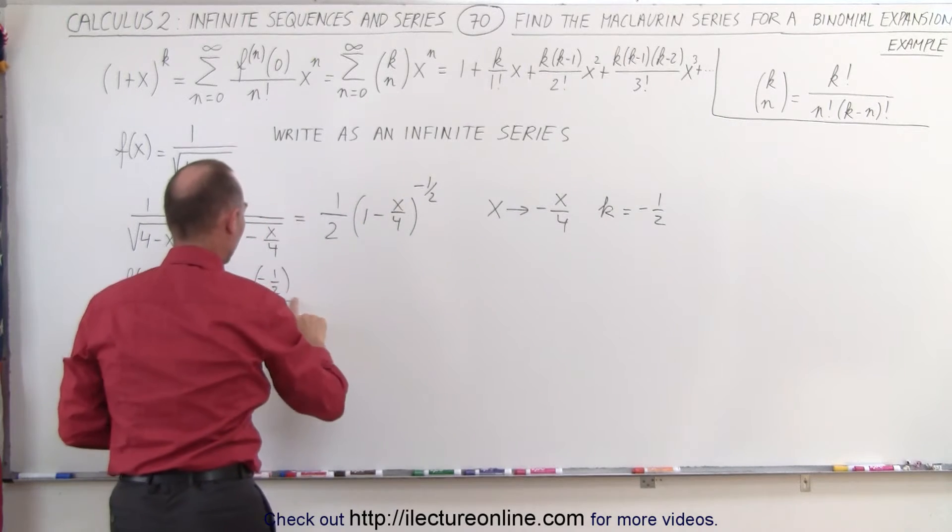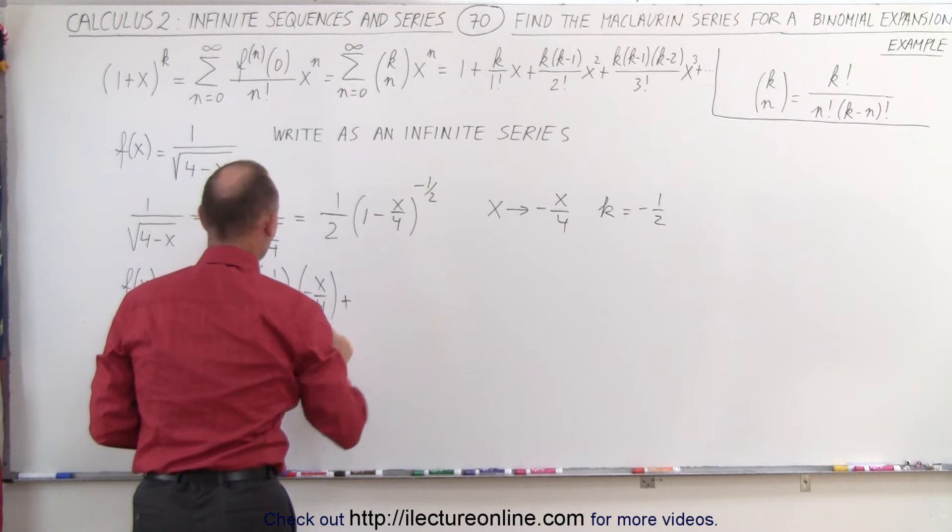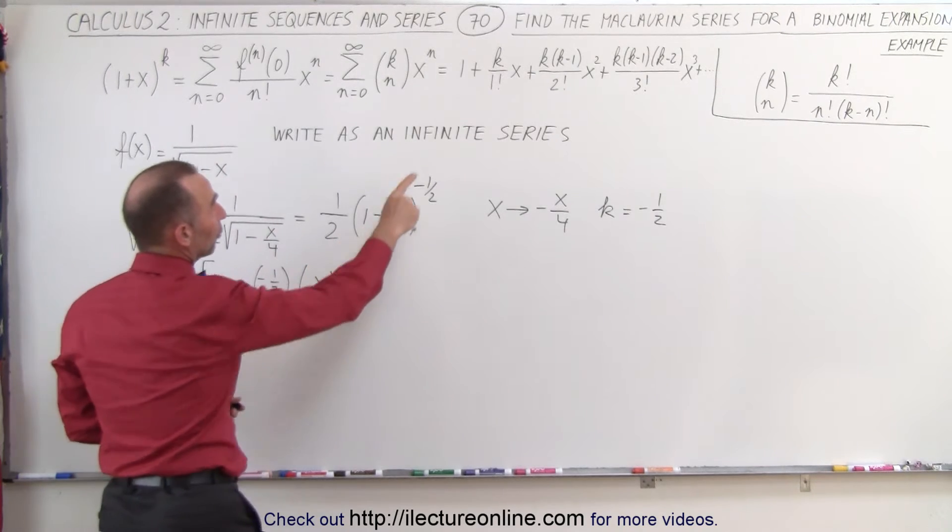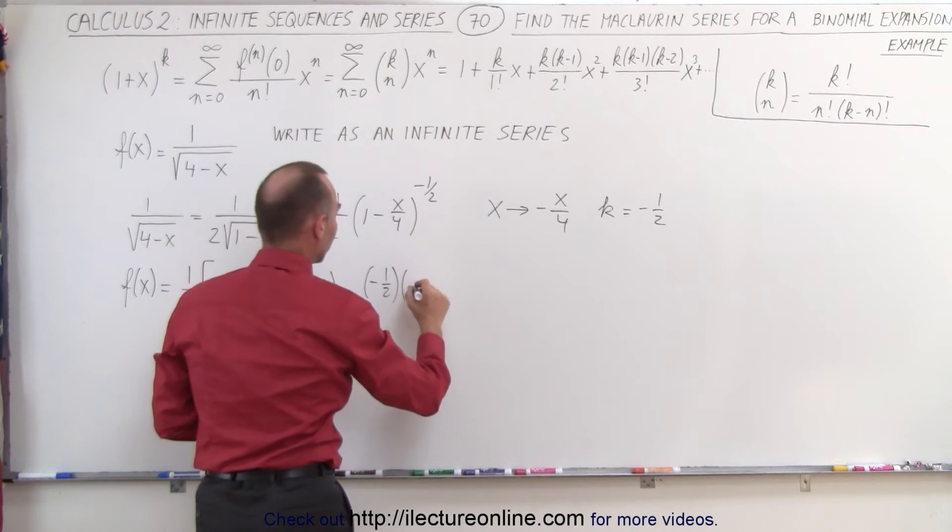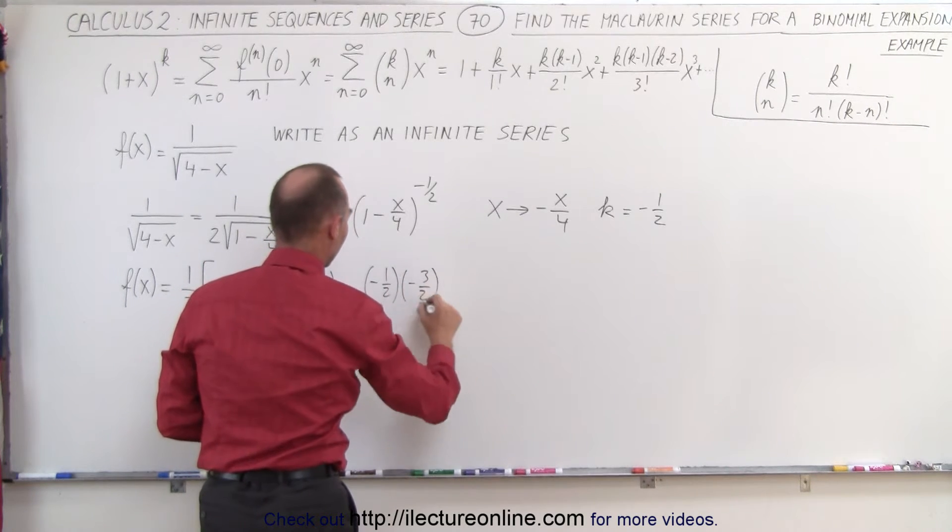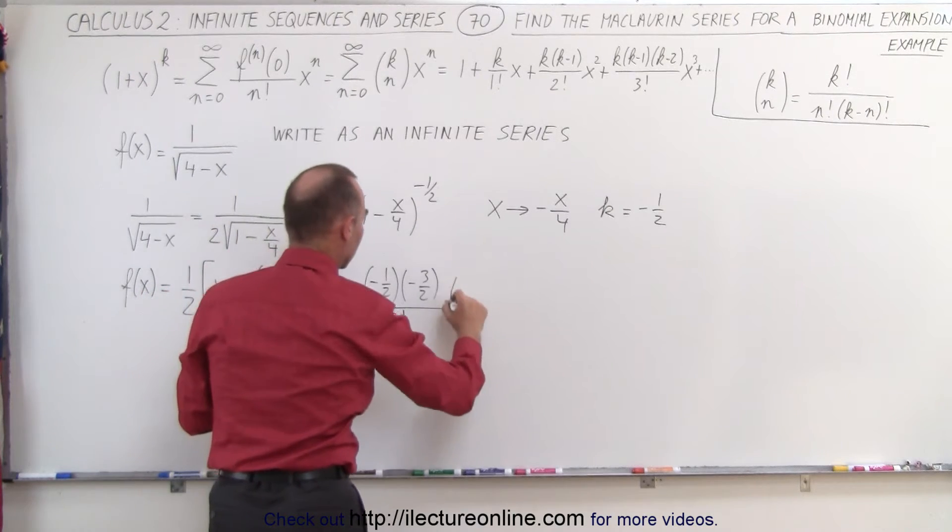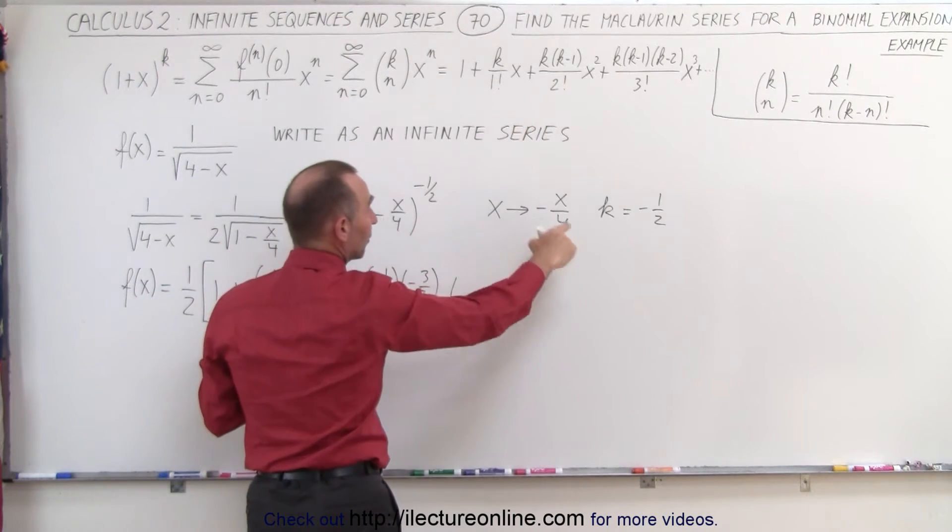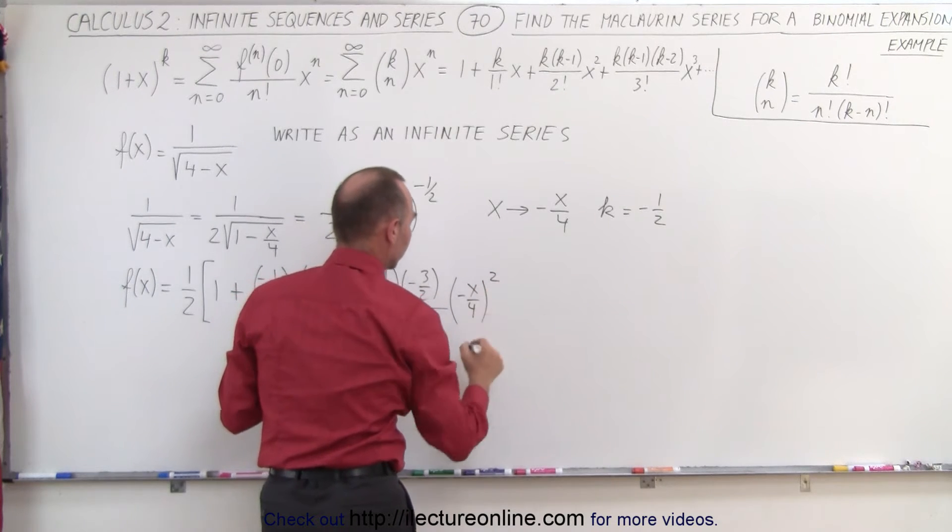Plus the third term notice we have k which is minus 1 half times k minus 1 which is minus 3 halves divided by 2 factorial and here this becomes x squared but instead of x squared we write minus x over 4 quantity squared.